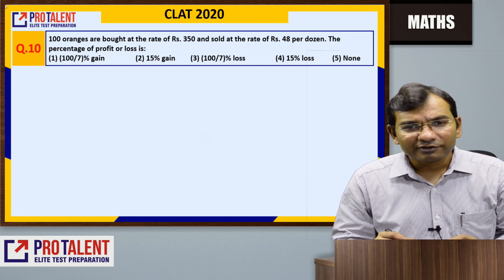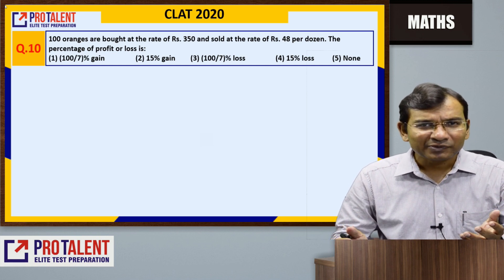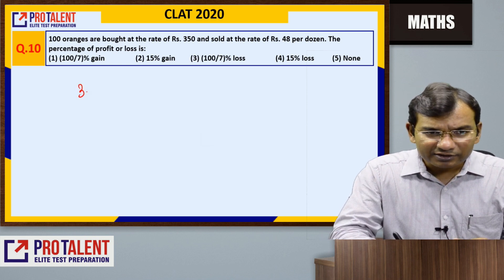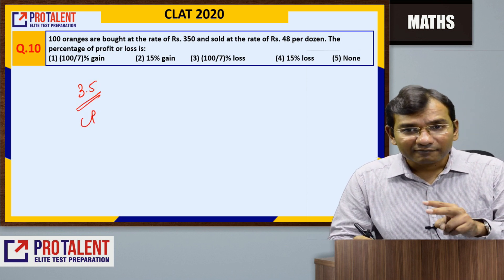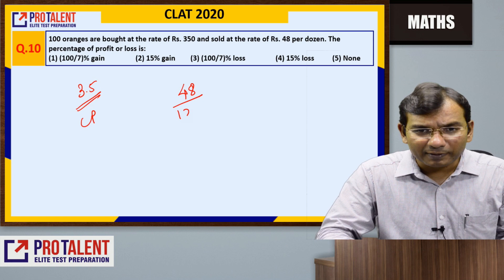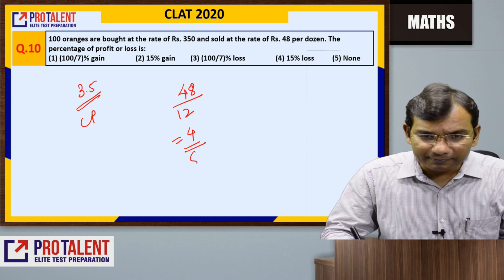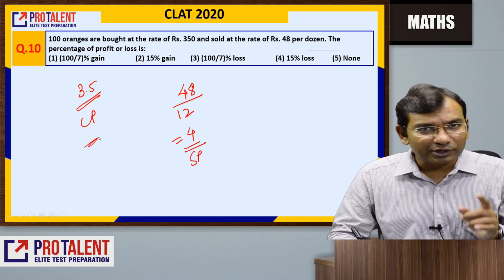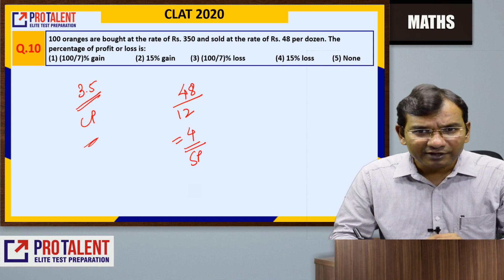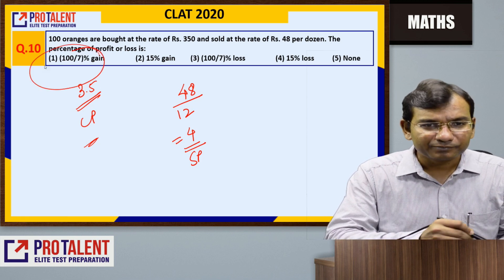Question 10: 100 oranges are bought at 350 rupees and sold at 48 rupees per dozen. CP per orange = 350 / 100 = 3.5 rupees. SP per orange = 48 / 12 = 4 rupees. Profit per orange = 0.5. Profit percentage = 0.5 / 3.5 = 100/7 percent profit.